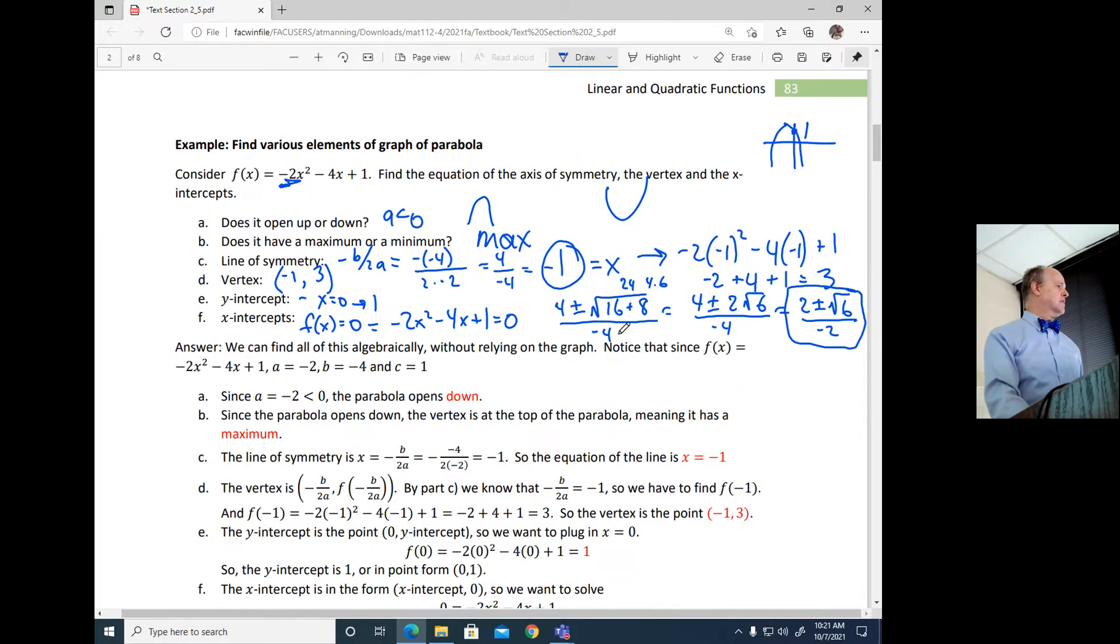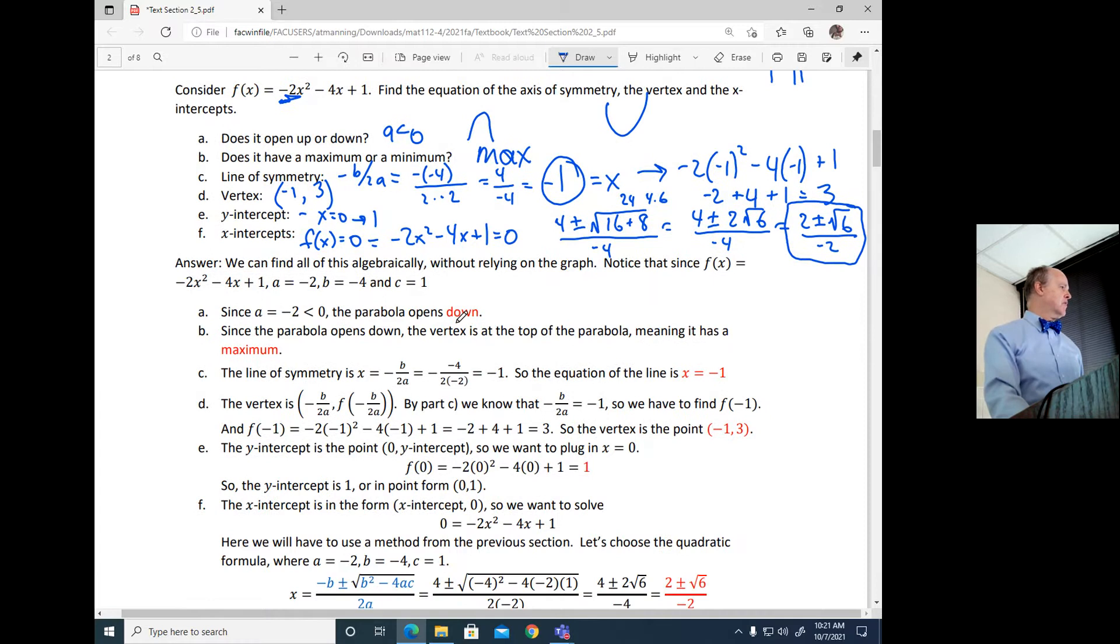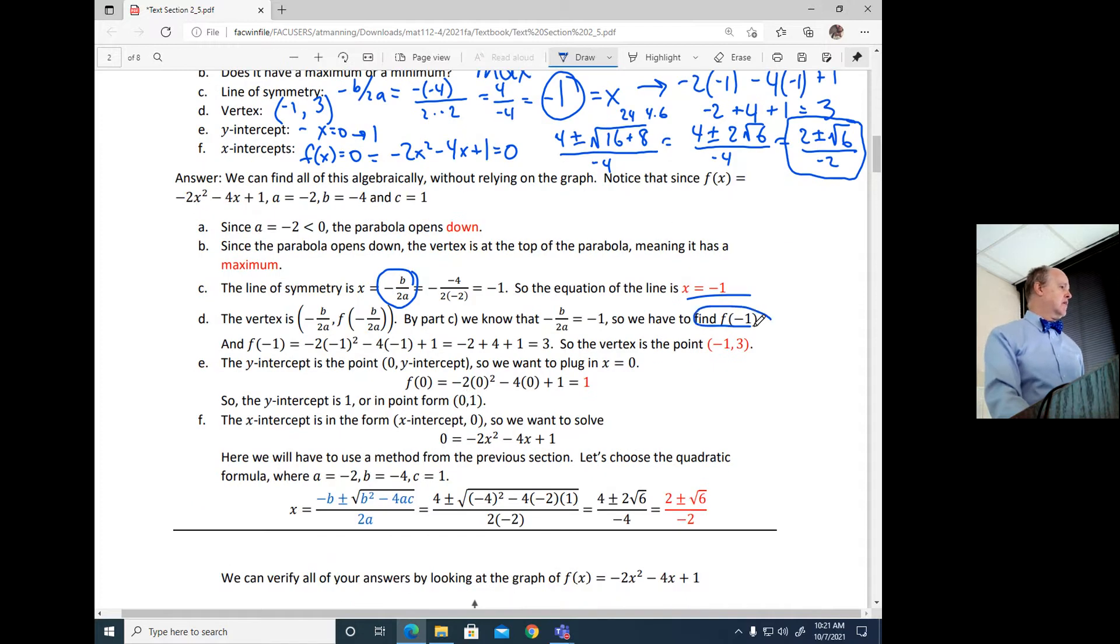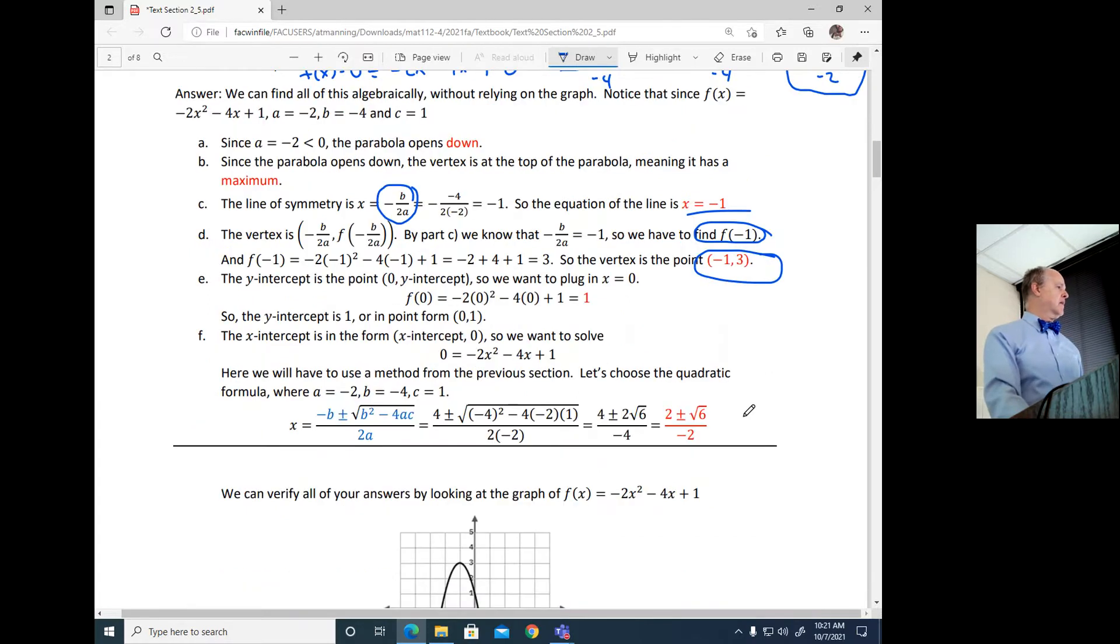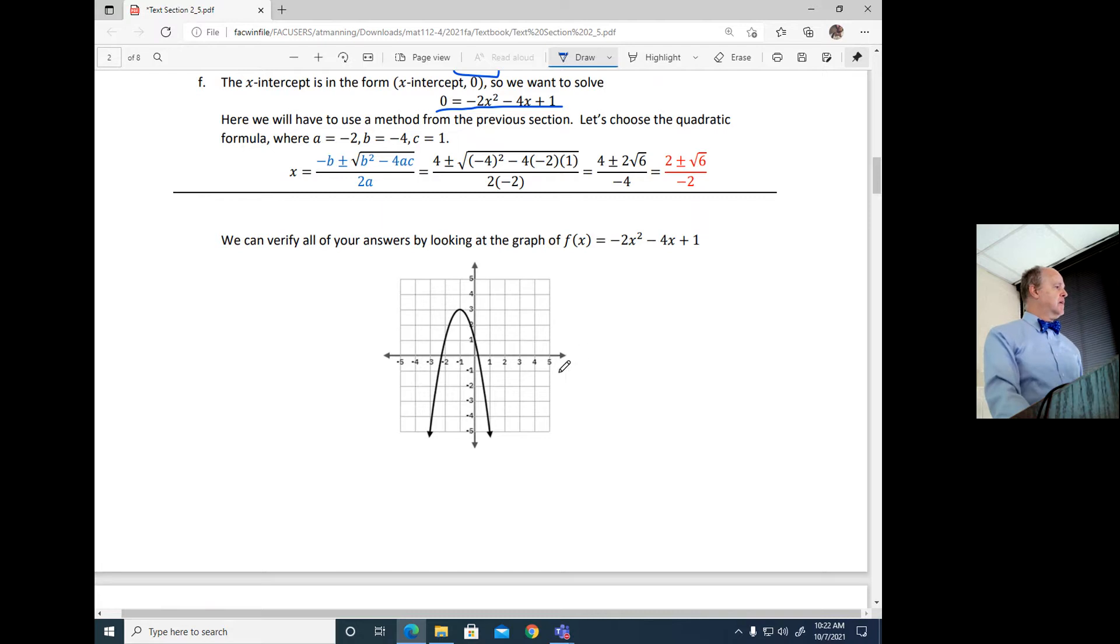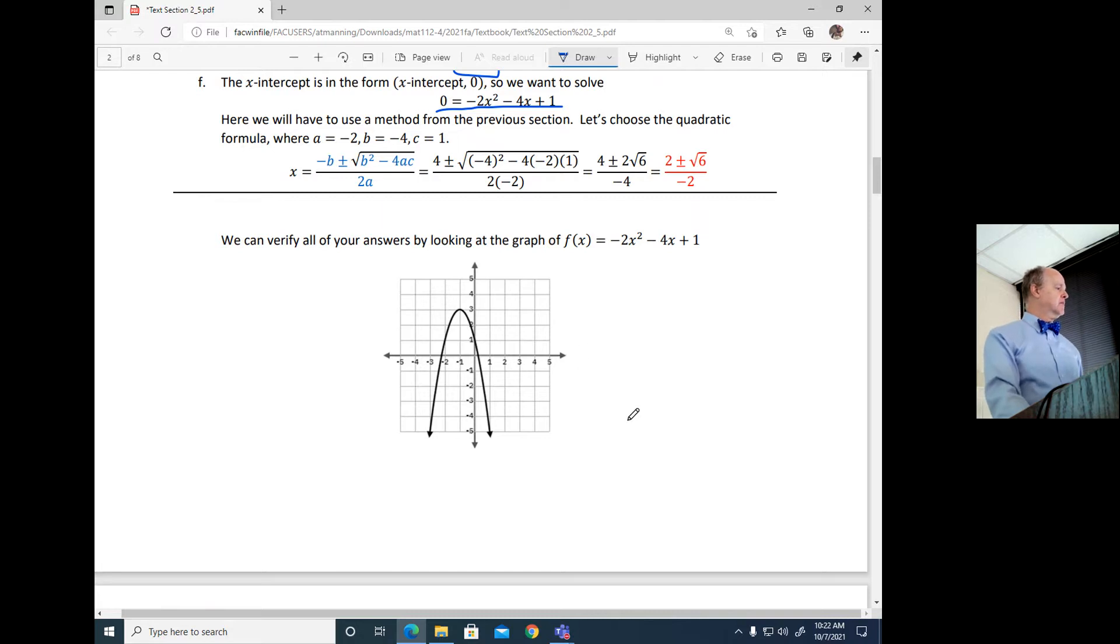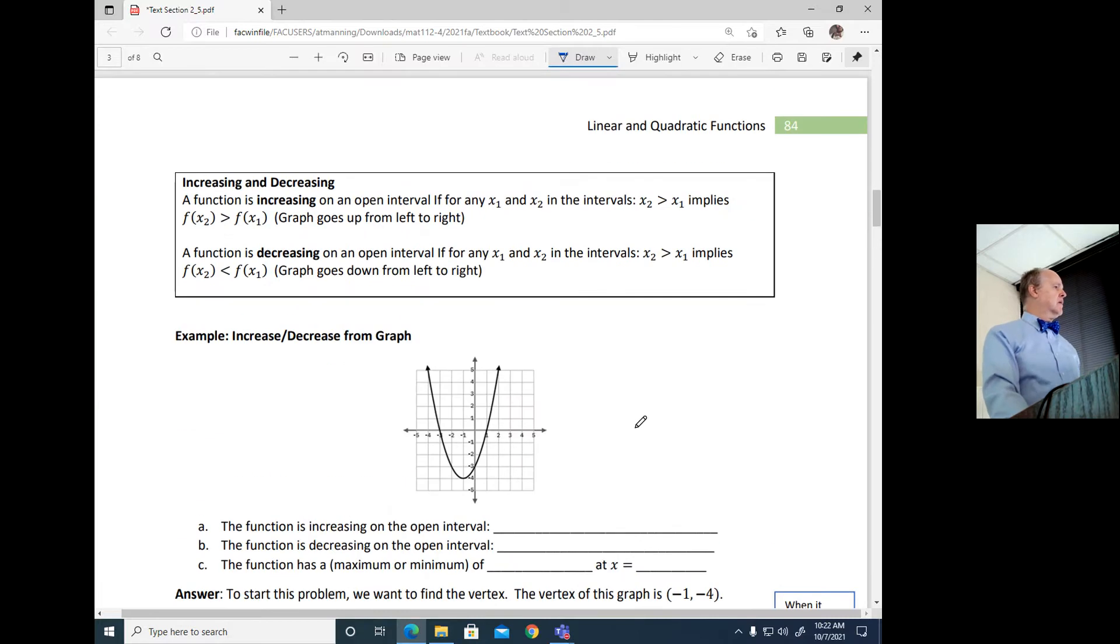See if they got the same answer. Yes, they did. 2 plus or minus square root of 6 over negative 2. So they did all the work for us. Later on, just to check, did we do it right? Yep. Opens down. Since it opens down, it has a maximum. x equals negative 1 is the vertex, just by solving negative b over 2a. And then plugging in negative 1 to find what is f of negative 1 gives me that point for my vertex. And then the very last one, this one was easy. x equals 0 gives me an easy answer. But the hardest one is those x-intercepts. That's where you have to crank it out through the quadratic formula.